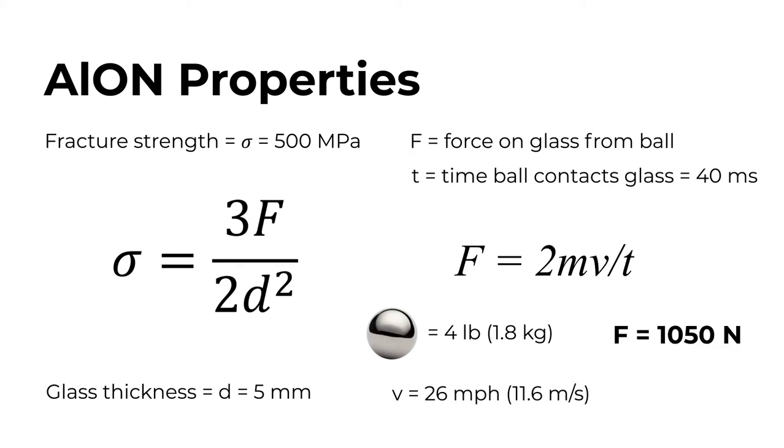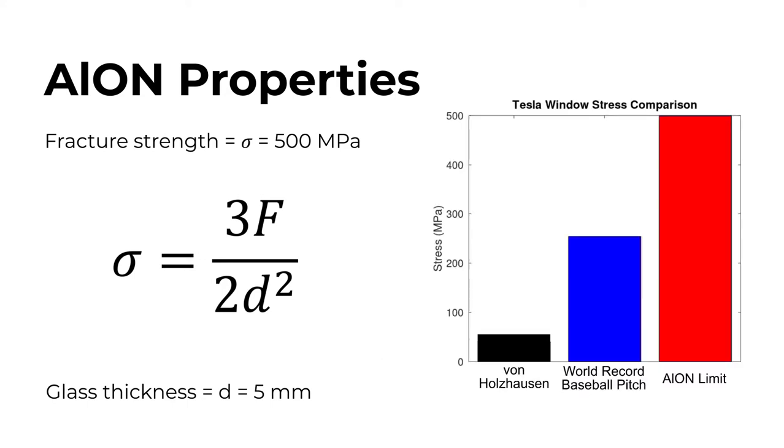This puts the stress on the window in the backstage video to be around 60 megapascals, nearly 10 times less than the maximum stress the material can withstand. Even if the ball were thrown at the world record speed for a baseball pitch of 105 miles per hour, the stress on the window would be only about half that of the material limit. So it's clear that the ball should not have been able to break the window, yet it did. So what happened?